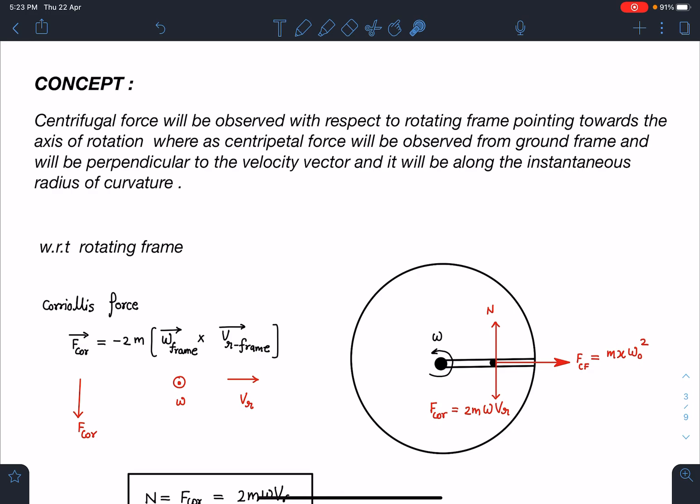Because from ground the path of particle is quite challenging, it's very difficult to guess. It will be somewhat like this curvature kind of path it will follow, whereas with respect to rotating frame if you see, you will see particle is just moving readily away from you.